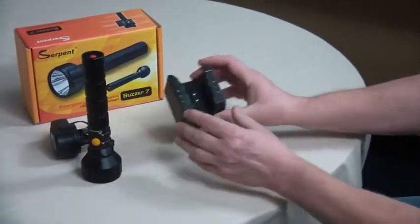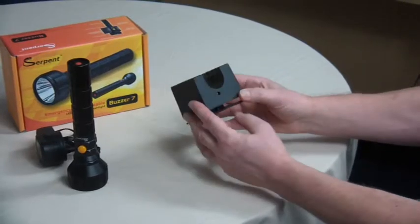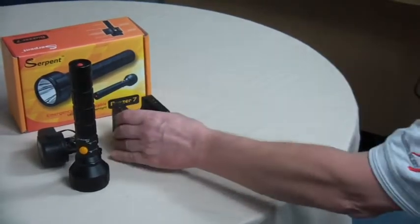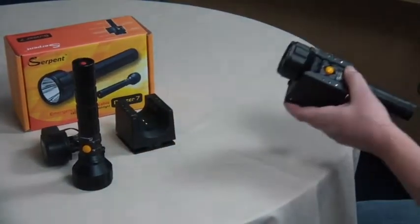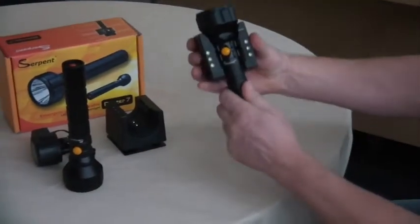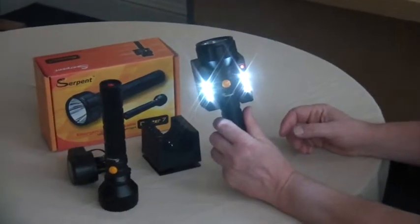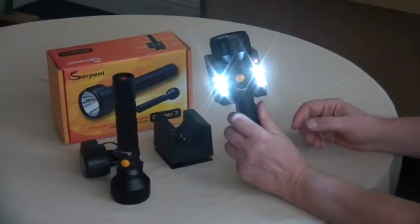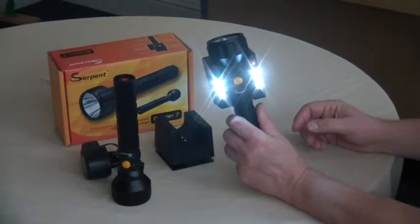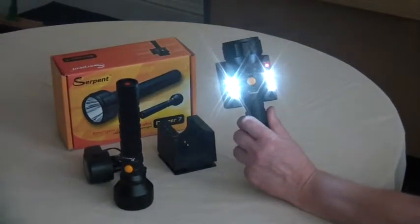It's got power failure LEDs built into the charging cradle. To demonstrate I'll turn the lights off and then in the event of a power failure the LEDs come on the charging bracket. This allows you to safely locate the torch without falling over. Just turn the light on.